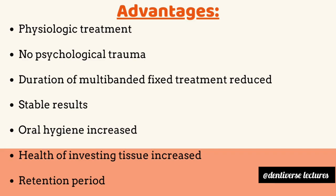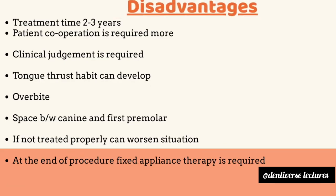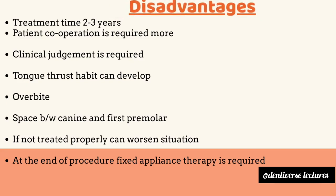Disadvantages are: treatment duration is more — about two to three years — so patient cooperation is also required more; more clinical judgment is required because the treatment approach is not the same for all; tongue thrust habit can develop; overbite can develop; space can develop between canine and first premolar; if not treated properly, it can worsen the situation by decreasing arch length, leading to migration of tooth; and at the end of the procedure, fixed appliance therapy is required to correct axial inclination of tooth.